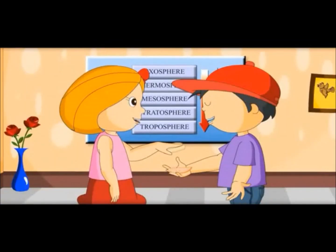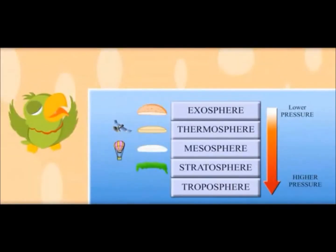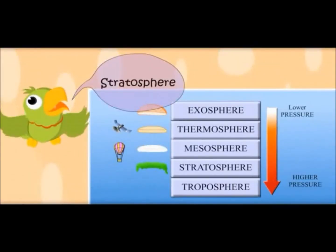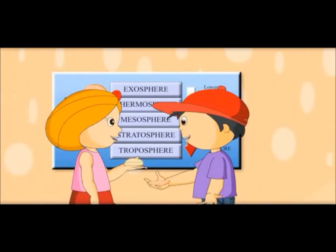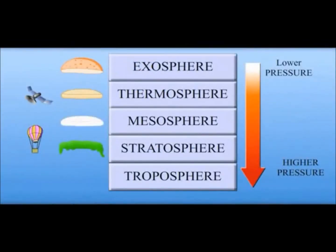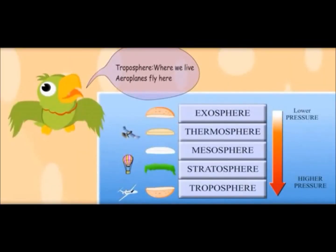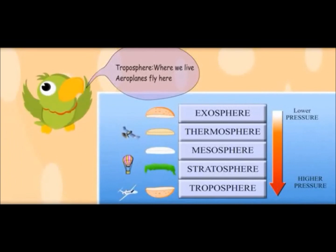This layer is called the stratosphere. Airplanes don't fly here — to see where airplanes fly, we need to come to another layer. This is the last layer, so airplanes fly here. Yes, air here is heaviest. This layer is called the troposphere — where we live, and airplanes fly here.